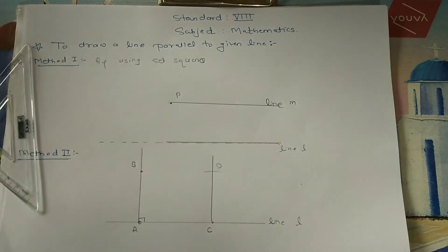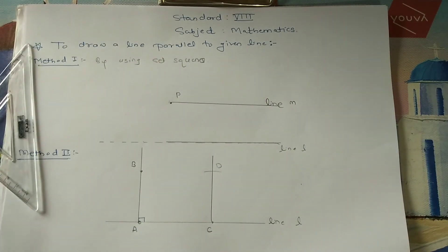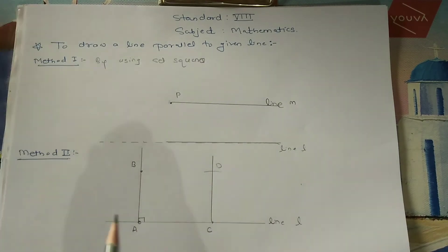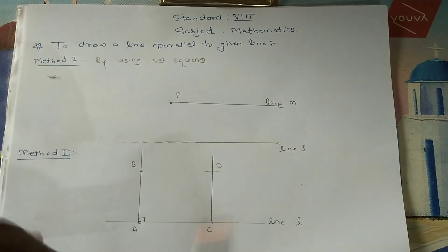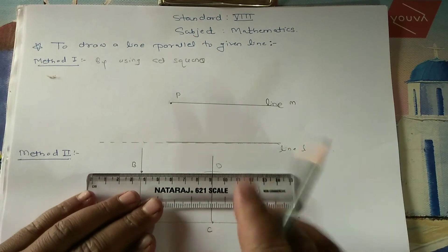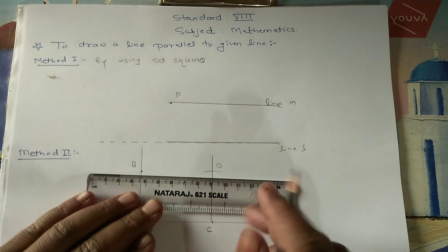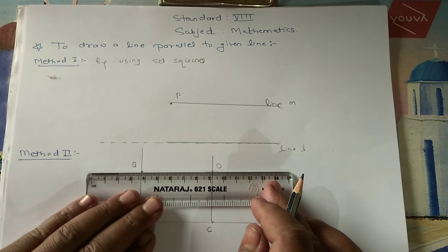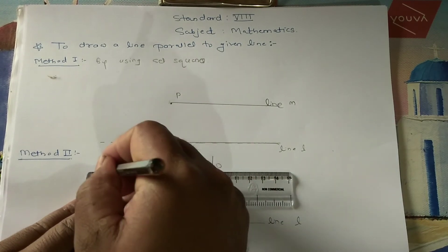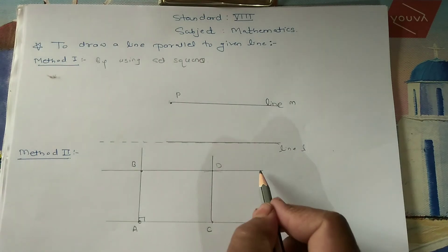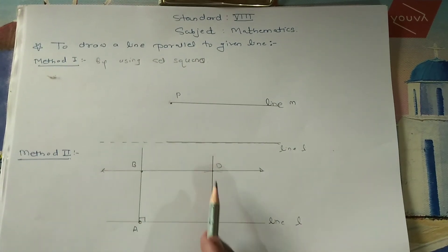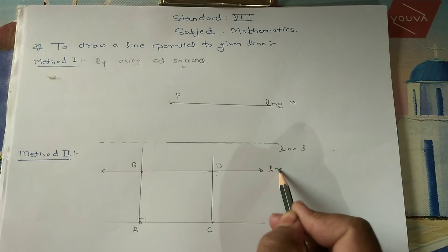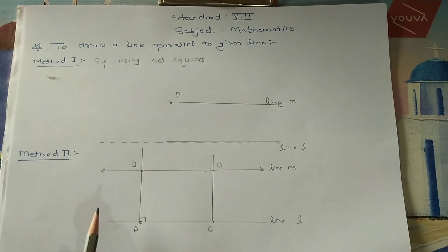Then, you have to draw a line passing through both points B and D. If you observe, this line is parallel to the given line. So, this is line M. This is method two.